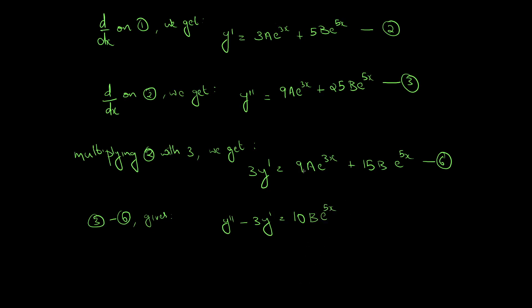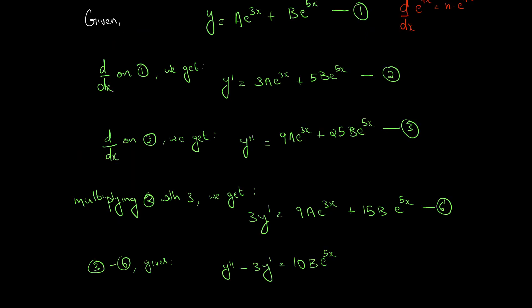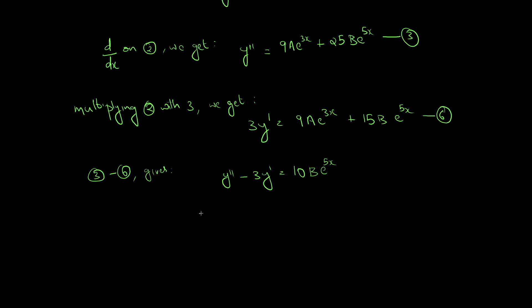So we can see from the previous step, using equation 2 we can find the a e raised to 3x term. We need 5b e raised to 5x. We can simply write b e raised to 5x equal to y double dash minus 3y dash, all divided by 10.